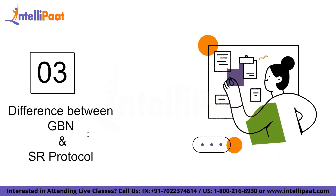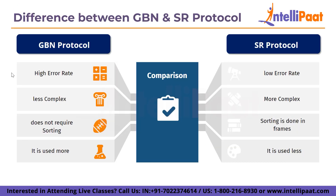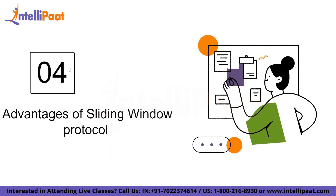Now let's understand the difference between GBN and SR protocol. In GBN, a high error rate wastes a lot of bandwidth, whereas in SR there is lower bandwidth loss. GBN is less complex, while SR is more complex because it requires sorting and searching and more storage. GBN does not require searching or sorting. In SR, sorting is done to get frames in correct order and search operations are also performed. GBN is used more widely, whereas SR is used less.